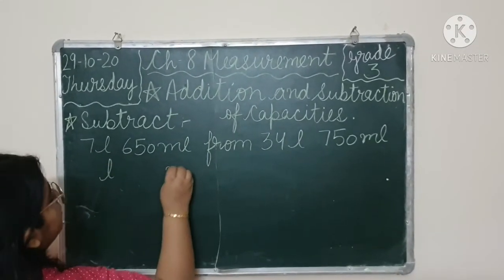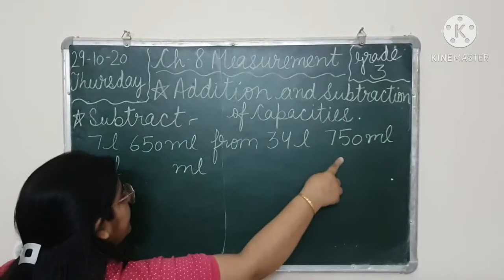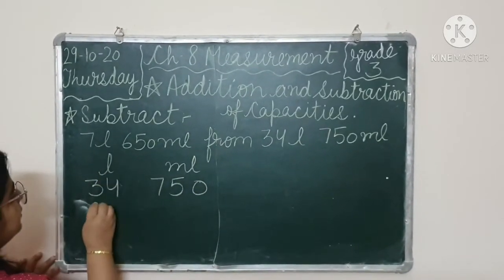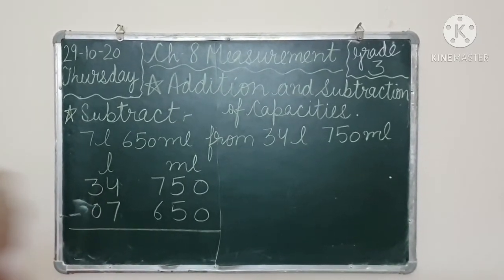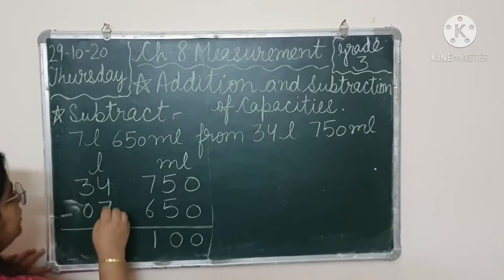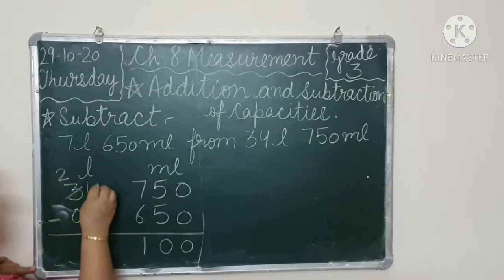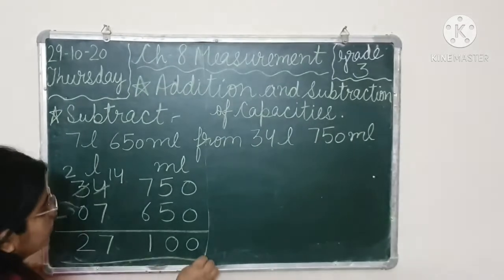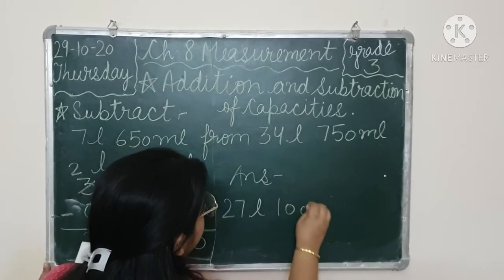First, we write in columns. We will write in columns, L and milliliter. We have from. So, first we take the bigger value, we have from, so we take the next number first. 34, 750. Then 7, 650. Now we will subtract this. How do we subtract? This is subtraction. So, 0 minus 0 is 0, 5 minus 5 is 0, 7 minus 6 is 1. 4, 7 - we cannot subtract 7 from 4. So, we borrow 1 from 3. So we borrow from here, what will it become here? It will become 14 here. 14 minus 7 is 7, and 2 minus 0 is 2. So, our answer is 27 liter, 100 milliliter.